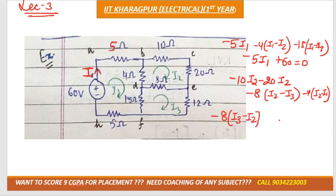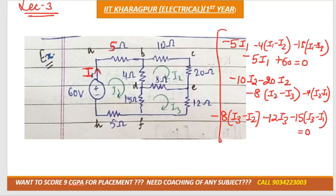The third mesh equation is: minus (i3 minus i2) minus 12·i3 minus 15·(i3 minus i1) equals 0. Now we have three mesh variables and three equations. We solve them through the calculator. They want us to calculate i1 only, but to get i1 we need to solve all three equations.